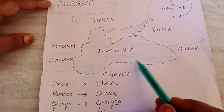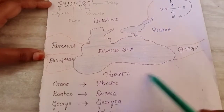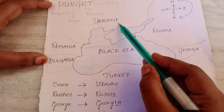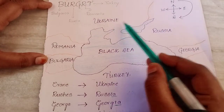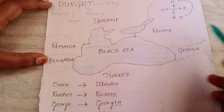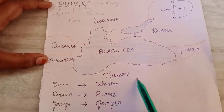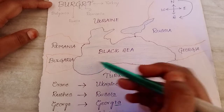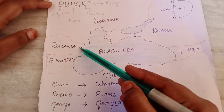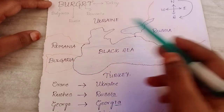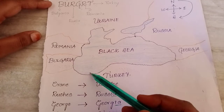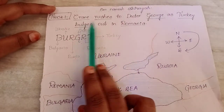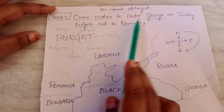This is the Black Sea, and these are the countries surrounding it. In the north we have Ukraine, in the east we have Russia and Georgia, in the south we have Turkey, and in the west we have Romania and Bulgaria. The trick to remember is: 'crane rushes to Dr. George as turkey bulges out in Romania.'